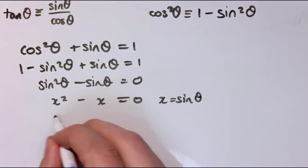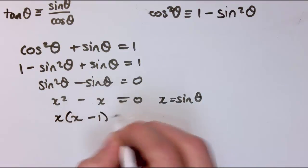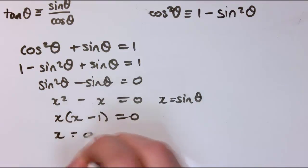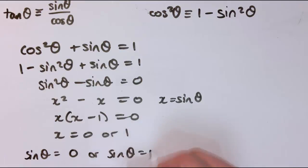Now this factorizes as x, x minus 1 equals 0. So I get x equals 0 or 1. So I need to find the values where sin θ equals 0 or sin θ equals 1.